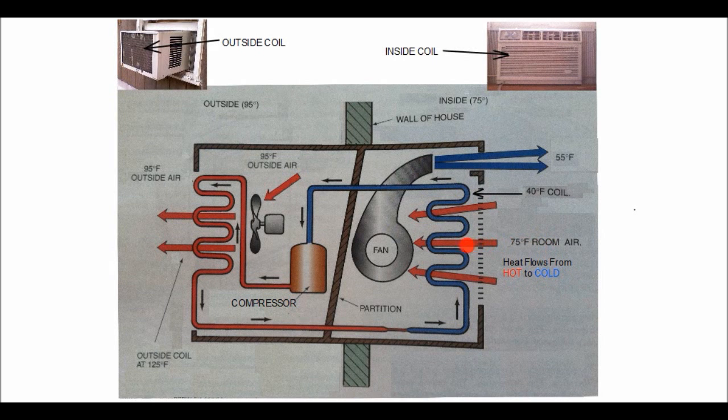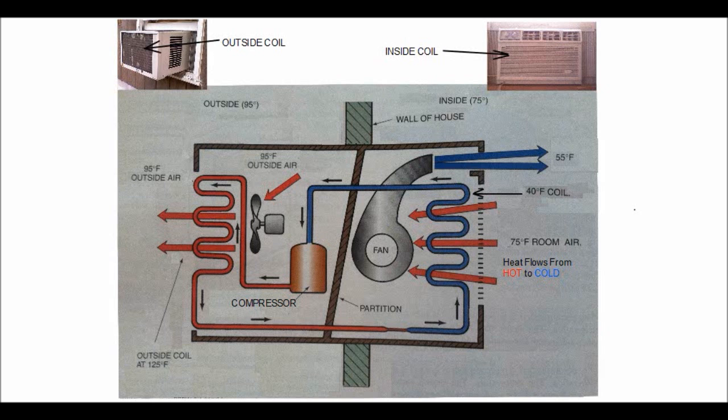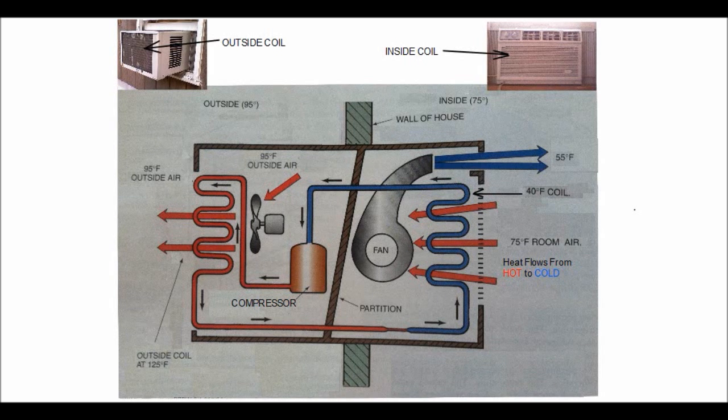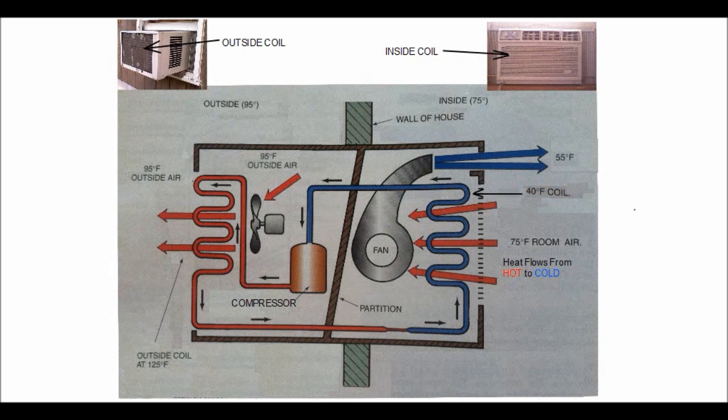Now remember from module one, that heat flows from hot to cold. So we have 75 degree room air flowing across a coil that's 40 degrees. So the heat from the room air flows out of the air and into the cooler coil.